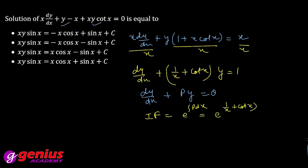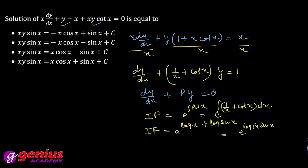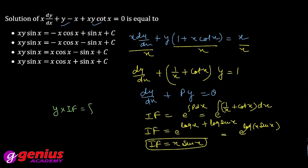P is 1/x plus cot x. The integration gives log x for 1/x and log(sin x) for cot x. Applying log m plus log n equals log(mn), the integrating factor becomes x sin x. Now using the formula: y times integrating factor equals integration of Q times integrating factor dx plus c. So y times x sin x equals integration of 1 times x sin x dx.